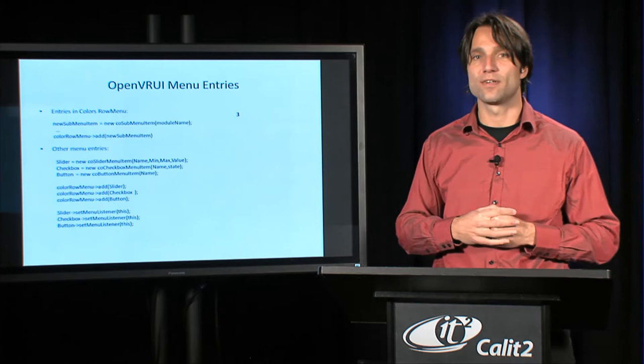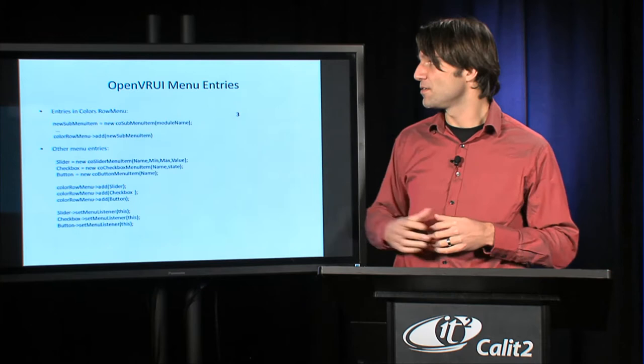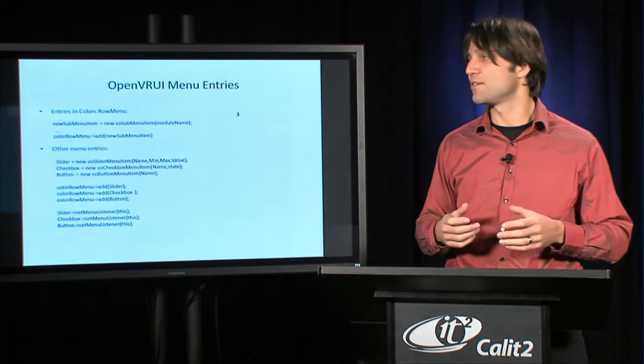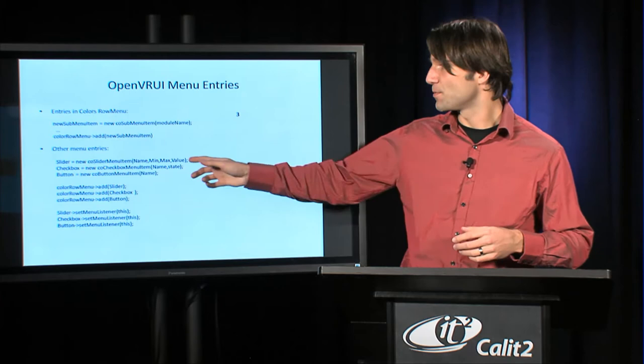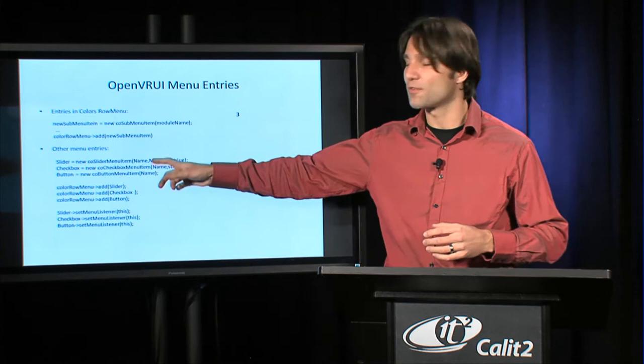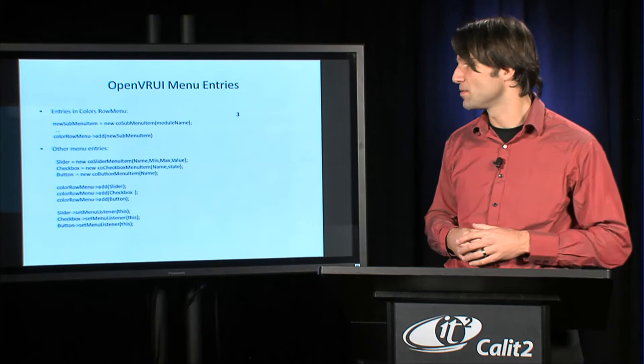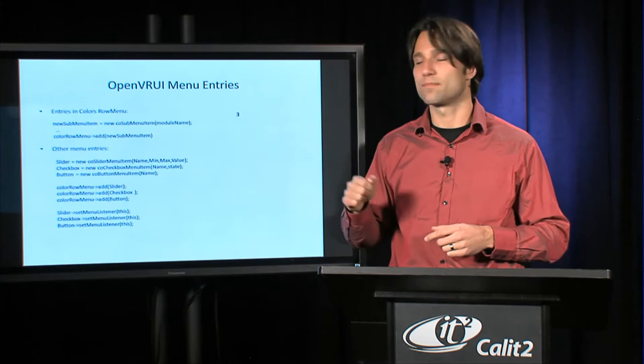When it comes to adding the two submenu entries in the colors menu, you would create a new submenu item and add that to the row menu. You can do this as many times as you want. In this case, we do it twice. If we were to add more menu items to this submenu, we would create instances of whatever type we want to add to the row menu and then add them to this menu.